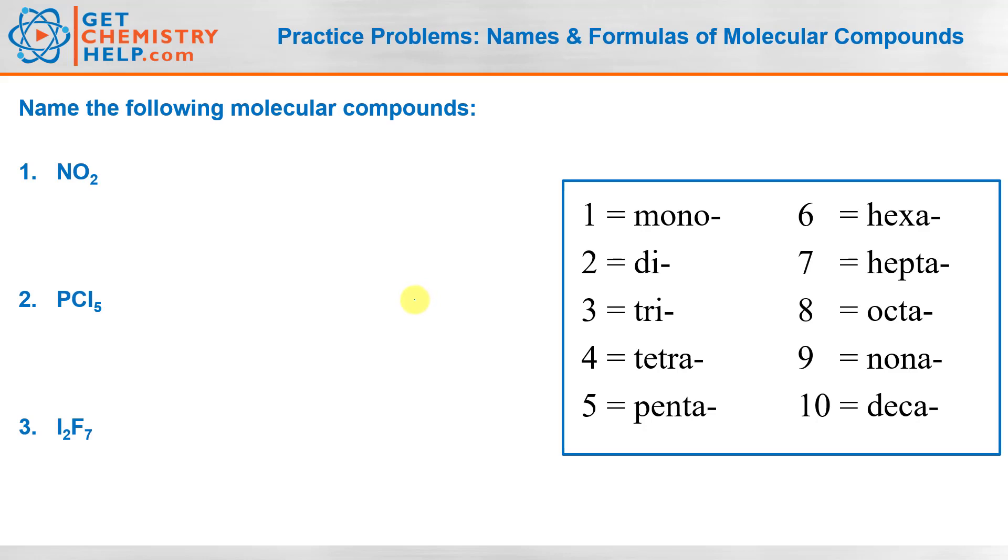If you haven't yet watched the lesson video on this, I encourage you to do that first. I'll link that below in the description and you may also want to download the accompanying PDF worksheet so you can print it out and follow along at home. You might also want to check out on the getchemistryhelp.com website a list of nomenclature rules and guidelines that are really helpful, so you may want to have that handy.